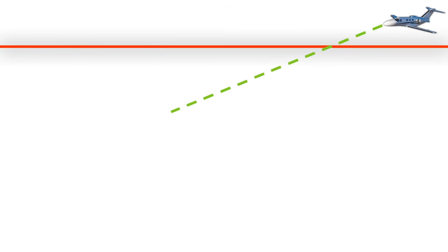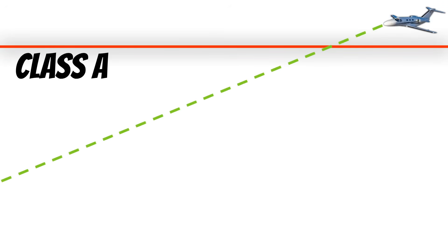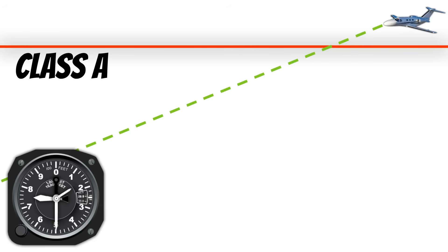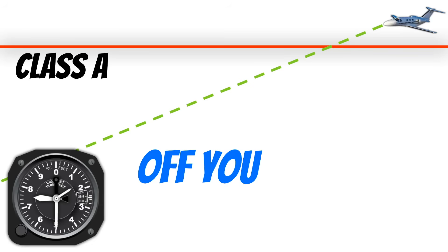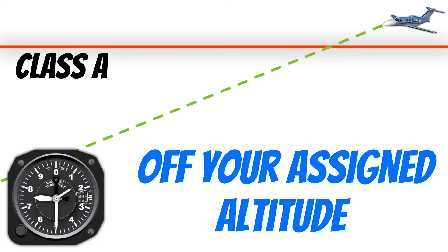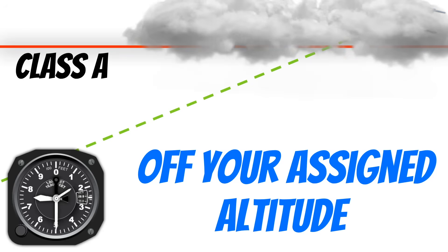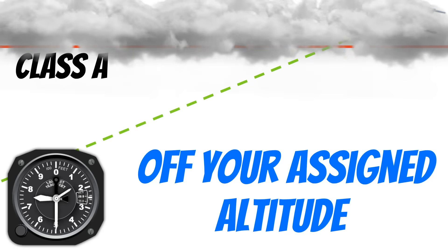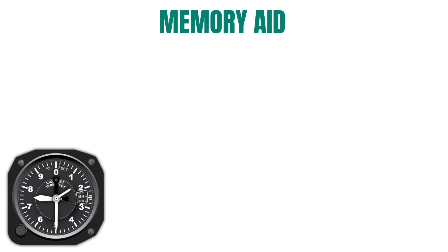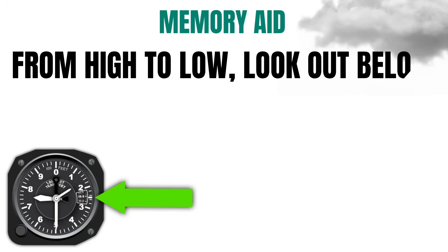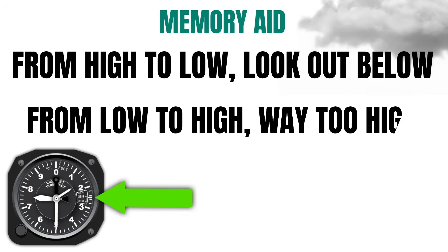Here's another problem that's a lot more likely to happen, and actually it's probably a lot more dangerous. What would happen if you descended out of class alpha from a flight level and you forgot to set the altimeter to the local setting? This can cause you to be off your assigned altitude, which can be quite dangerous if you're flying in the weather. Here's a quick memory aid: from high to low, look out below. And from low to high, you're way too high. The first one simply means that if you go from a high altimeter setting to a lower altimeter setting, look out below because you're lower than you think. Your altimeter will fool you into thinking that you're flying at a safe altitude when you're actually way too low.